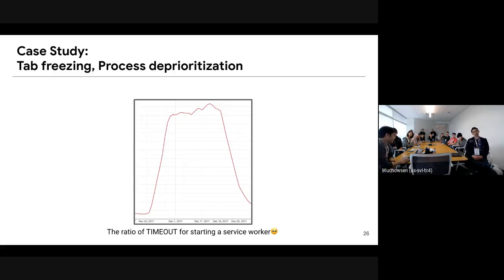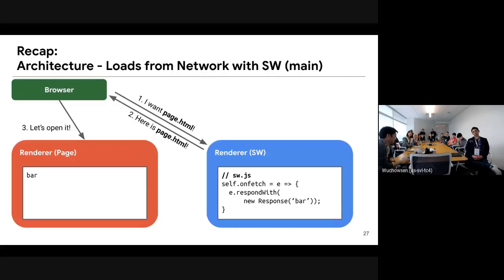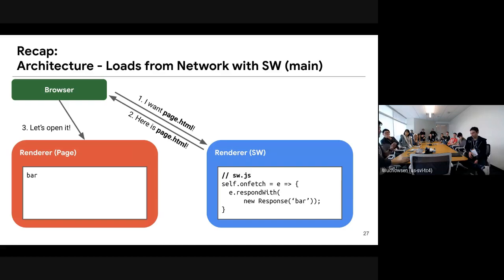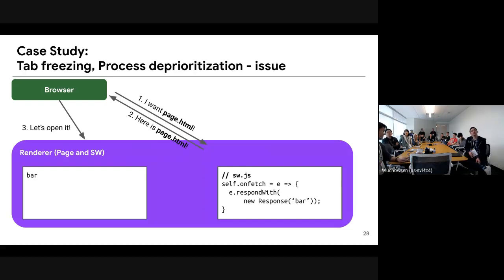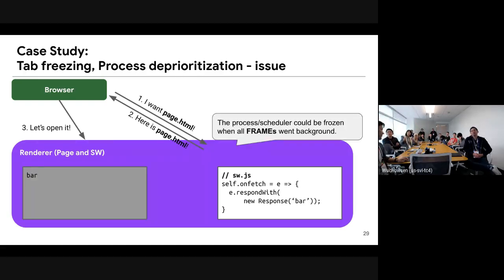The issue was in how the main resource response is loaded. These two — the page and the service worker — could be in the same process. If the page goes to the background, the attempt was to freeze the renderer process or its scheduler when all frames went to the background.